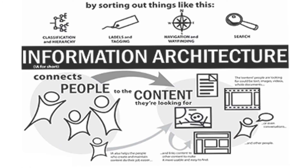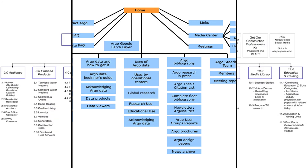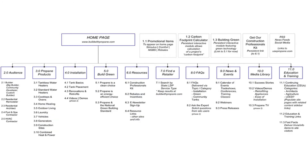After all this analysis and research work, you will create information architecture. Information architecture is like a site map — you will map out the complete details, start points, branches, and get a rough sketch but a complete idea of the structure.